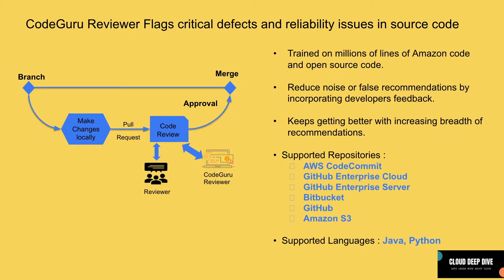Based on that feedback, they train or retrain their models and try to give you correct recommendations next time, in case any false recommendation was provided. It keeps getting better with an increasing breadth of recommendations. Right now they support around nine or ten recommendations, and these are increasing day by day. So developers don't need to keep up to date with all the best practices because CodeGuru Reviewer will train its model to incorporate new best practices and make sure it's providing comments on those.